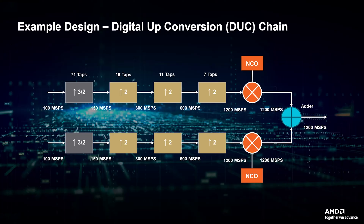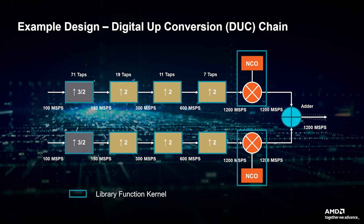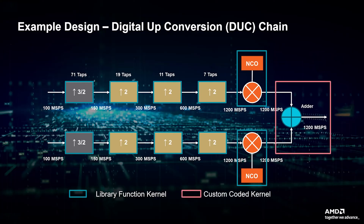The FIR fractional resampler, the half-band interpolators, and the DDS mixer functions can be implemented using the Vitis DSP library, which is available on GitHub. The adder function is not available in the Vitis DSP library and will need to be custom coded. We will assume you have already implemented the first part of the chain using the DSP library, and we will focus on the fast prototyping of the custom kernel, which is the custom adder.